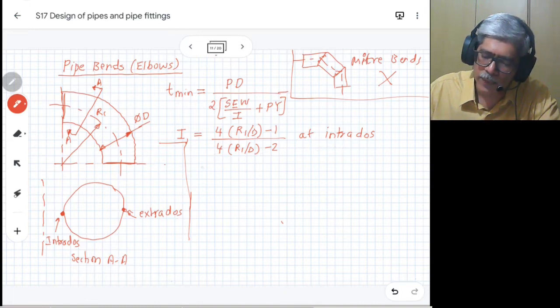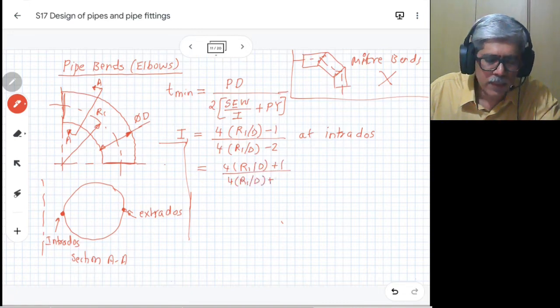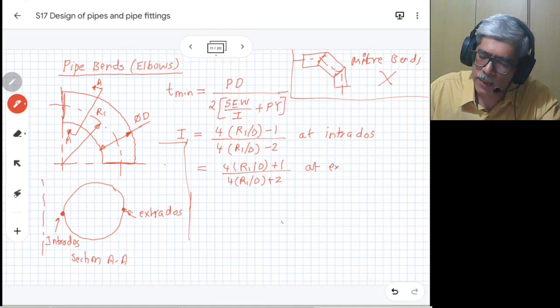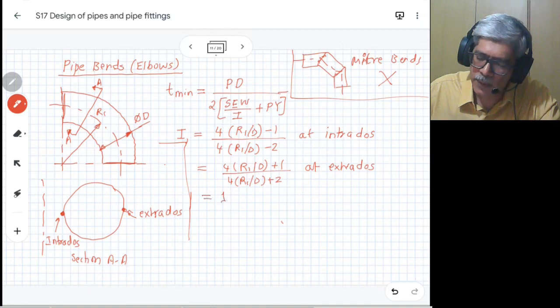As a result, both thicknesses need to be calculated and mentioned for the inspector to check. This I is given at intrados by this particular factor. It is also given at the extrados by the factor: 4(R1/D + 1) divided by 4(R1/D + 2). This is at extrados.